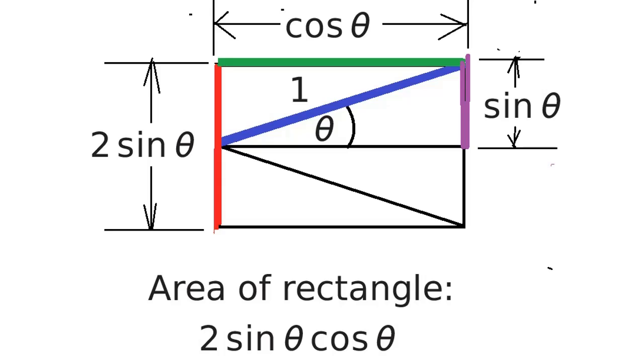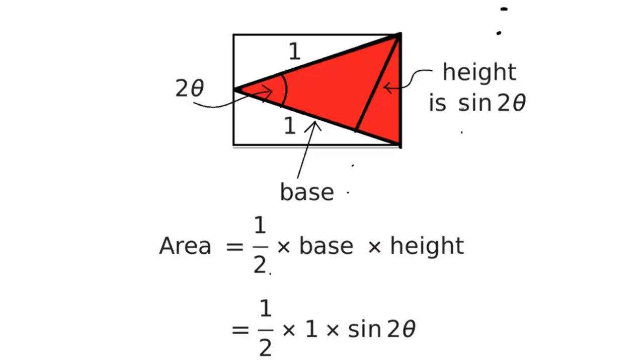So the area of the entire rectangle is two sine theta times the cosine of theta. Now we'll do the triangle area.